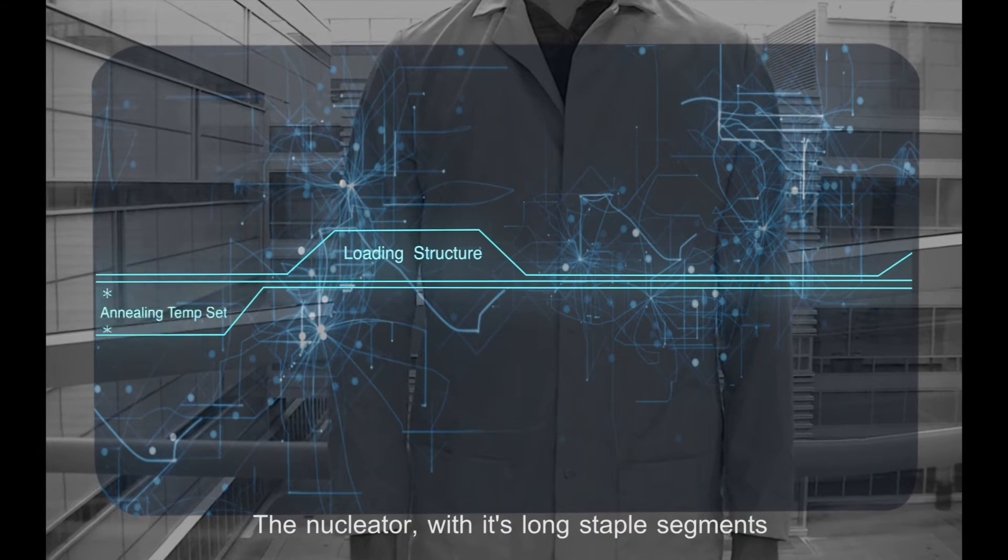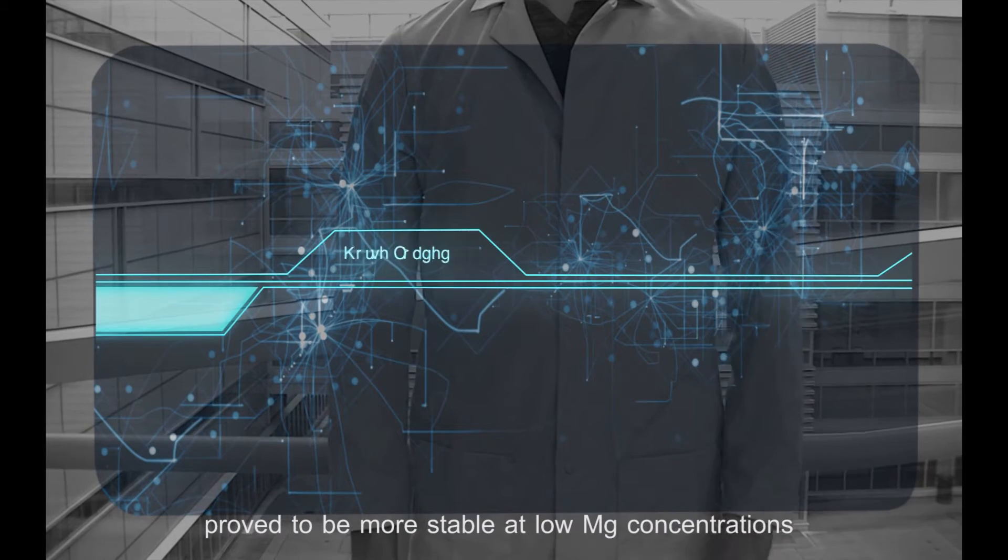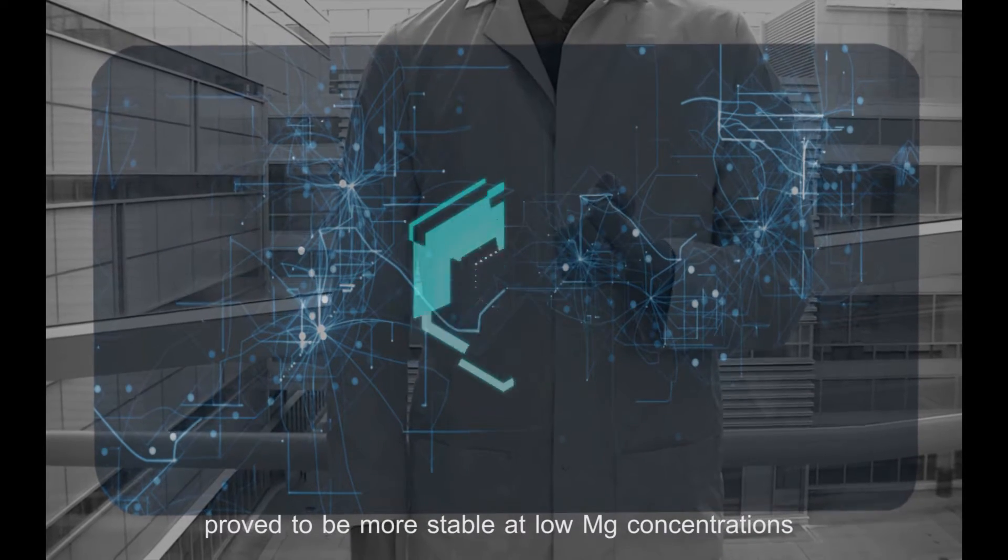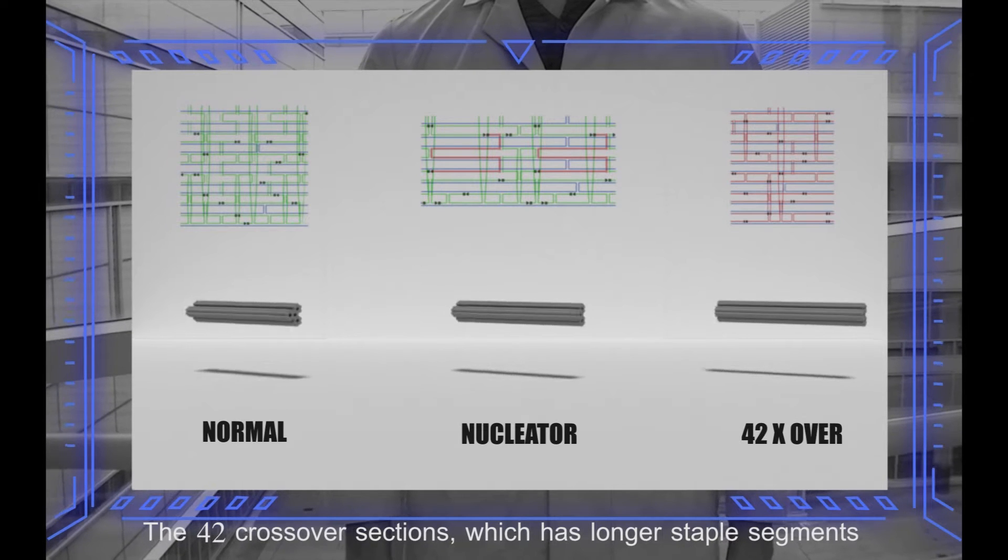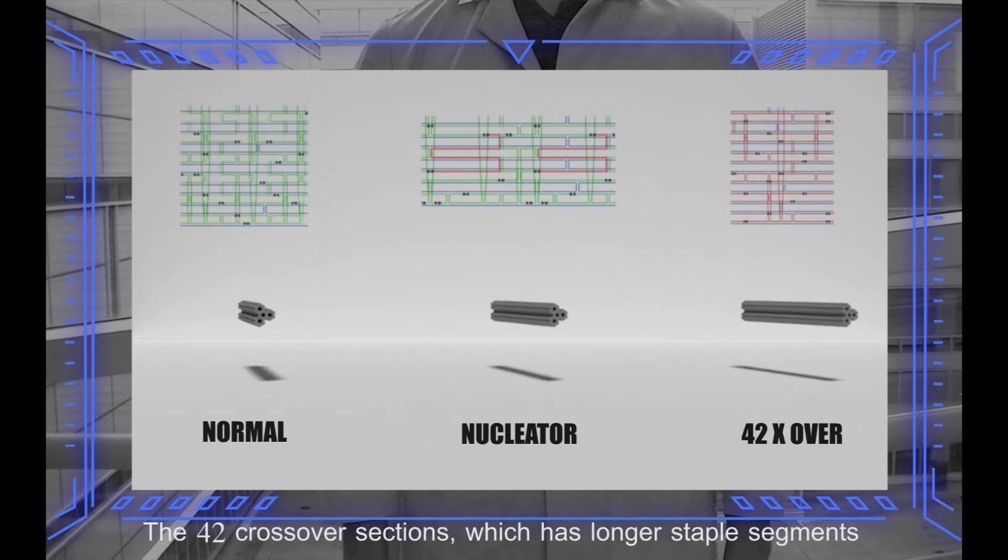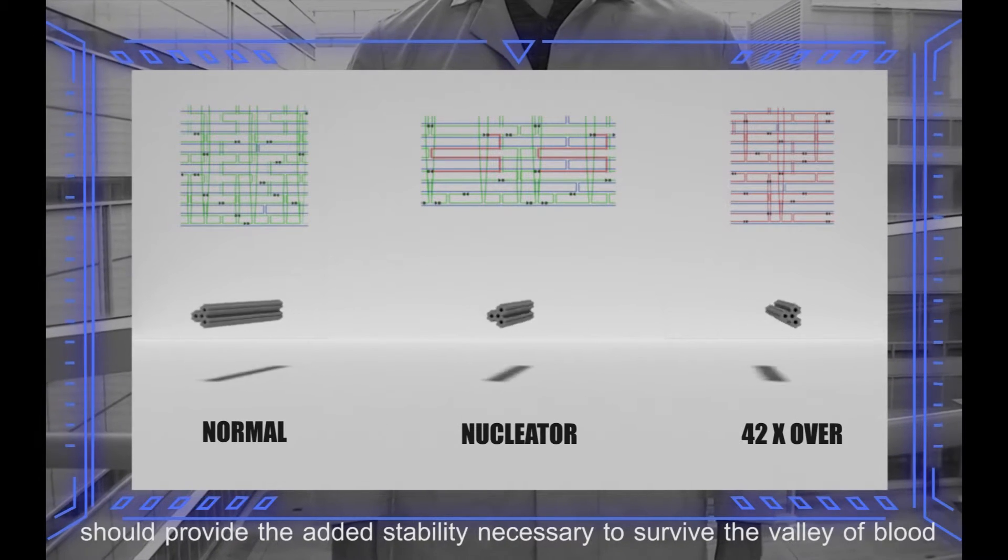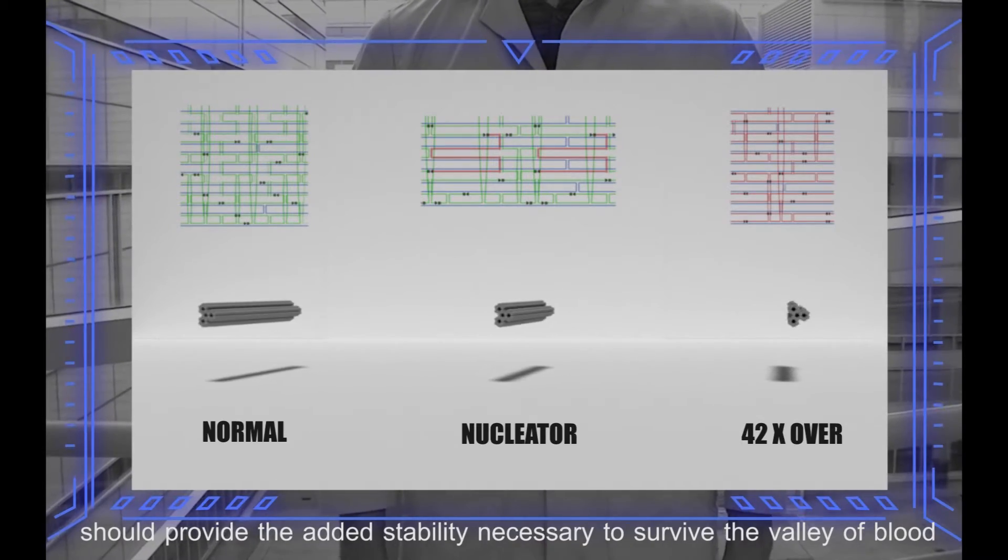The nucleator with its long staple segments proved to be more stable at low magnesium concentrations due to higher binding amenity. The 42 crossover sections, which has longer staple segments, should provide the added stability necessary to survive the valley of blood.